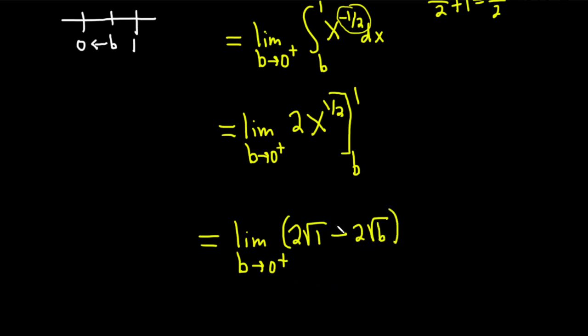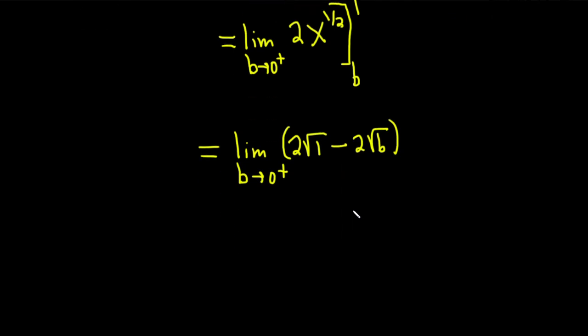And we can actually just plug in b equals 0 at this point. When we do that, we drop the limit sign. So this is equal to 2 times 1 minus 2 times the square root of 0, which is just 2 minus the square root of 0 is 0. So you get 2 times 0, which is 0. So you get 2.